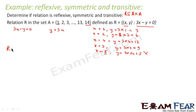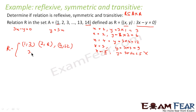So the elements in this relation are the pairs (x, y): (1, 3), (2, 6), (4, 12), and (3, 9). So the relation has 4 elements: (1,3), (2,6), (4,12), and (3,9).